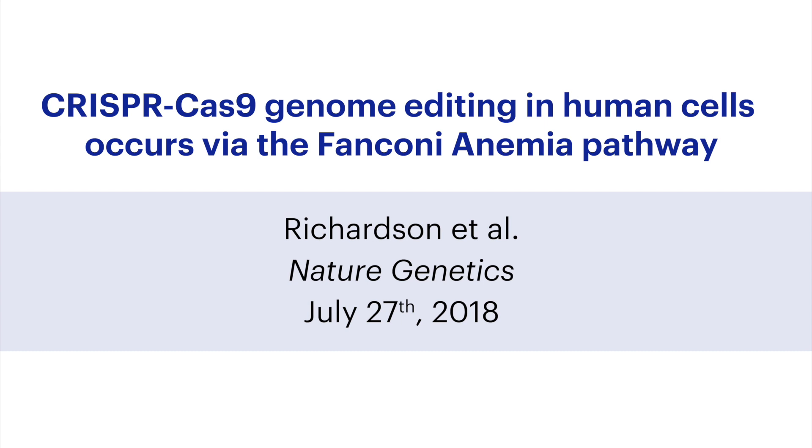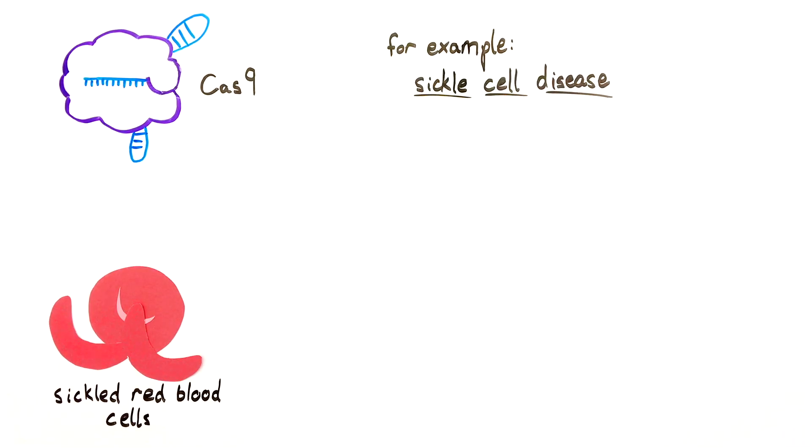CRISPR-Cas9 Genome Editing in Human Cells Occurs Via the Fanconi Anemia Pathway. The genome editing tool, CRISPR-Cas9, has the potential to treat a range of genetic diseases.